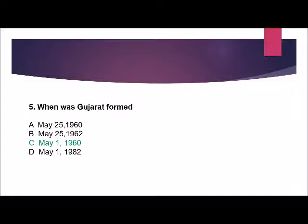Question number 5: When was Gujarat formed? Options are: May 25, 1960; May 25, 1962; May 1, 1960; or May 1, 1982. The correct answer is May 1, 1960.